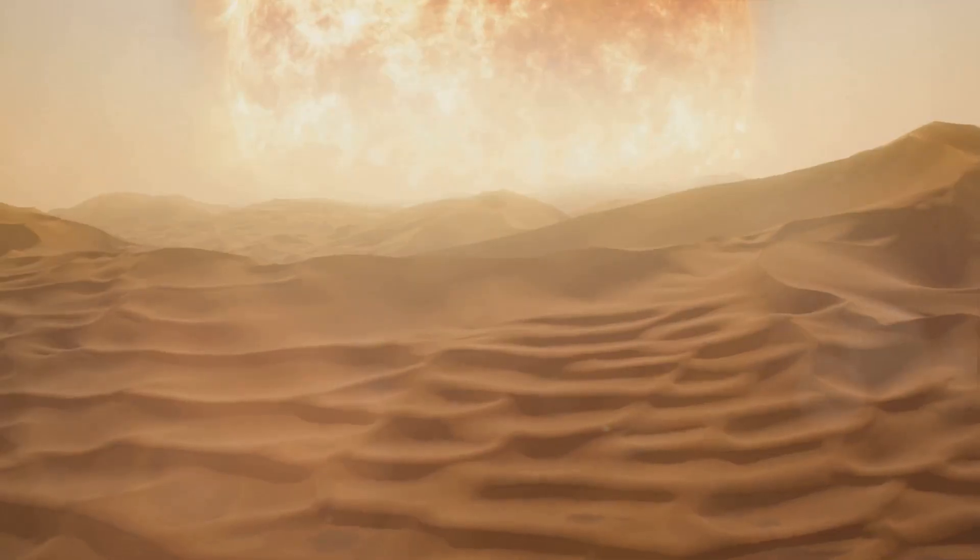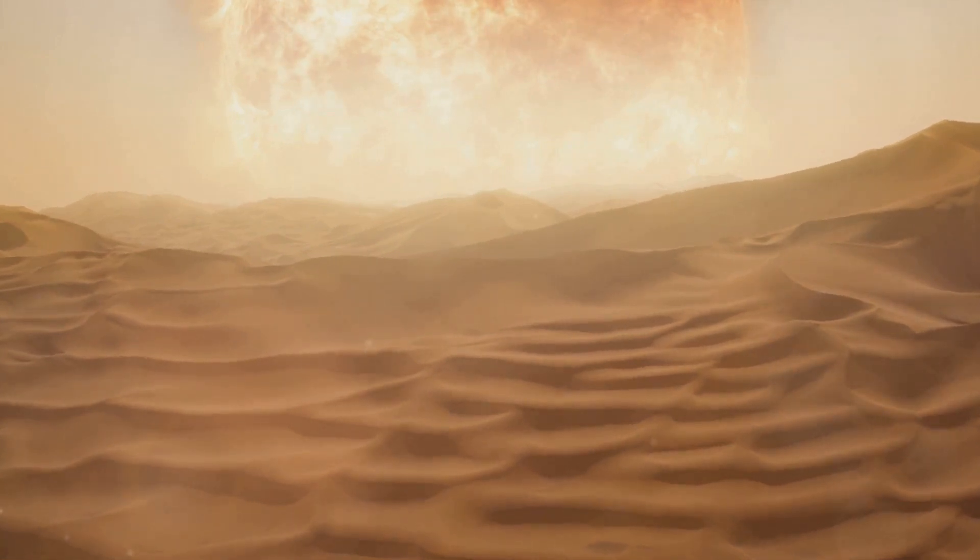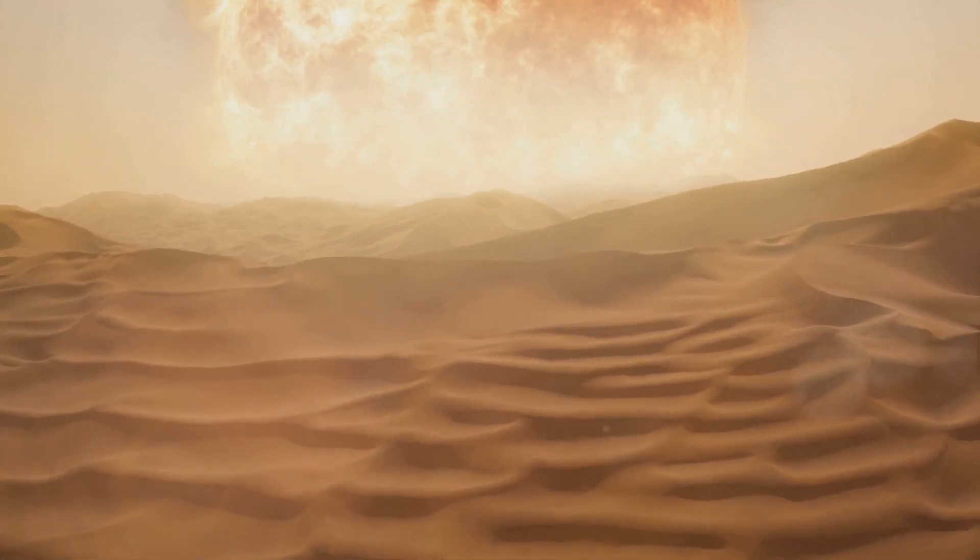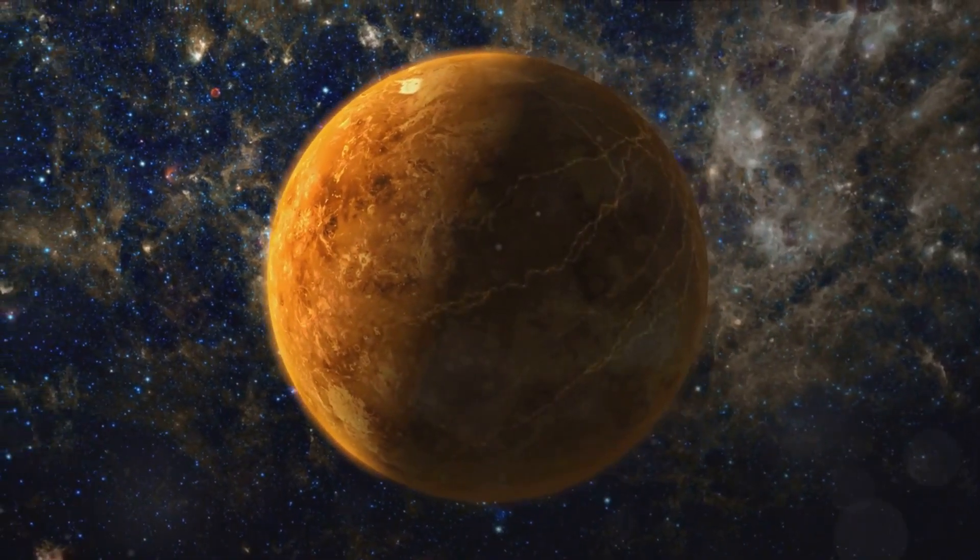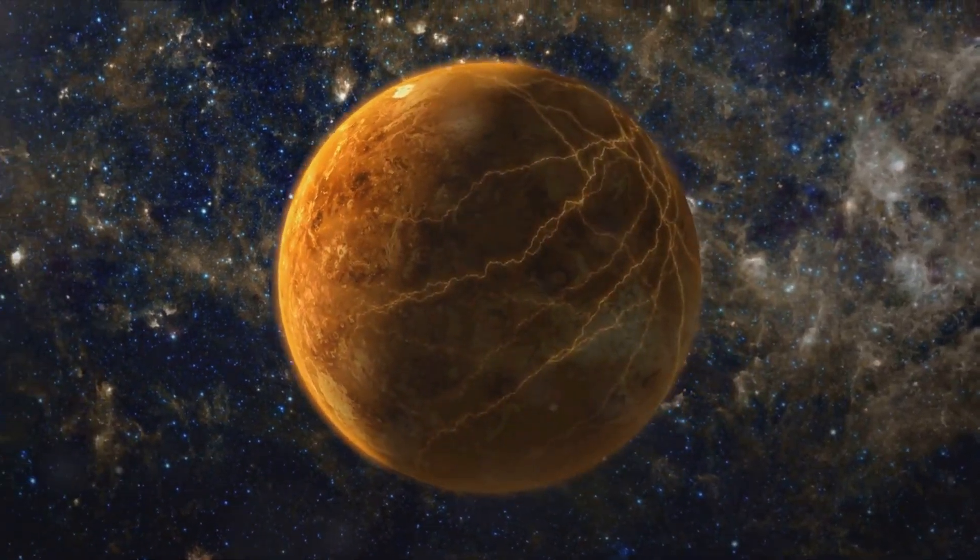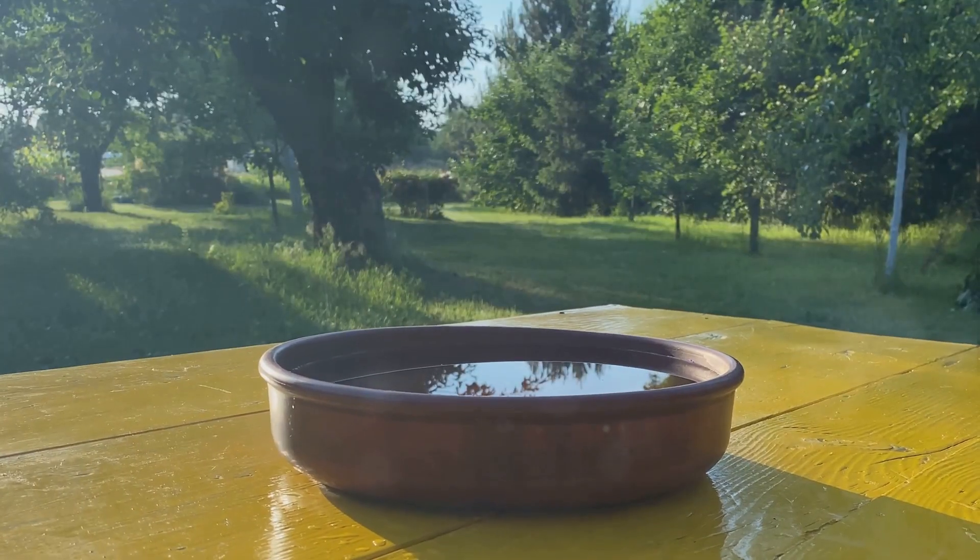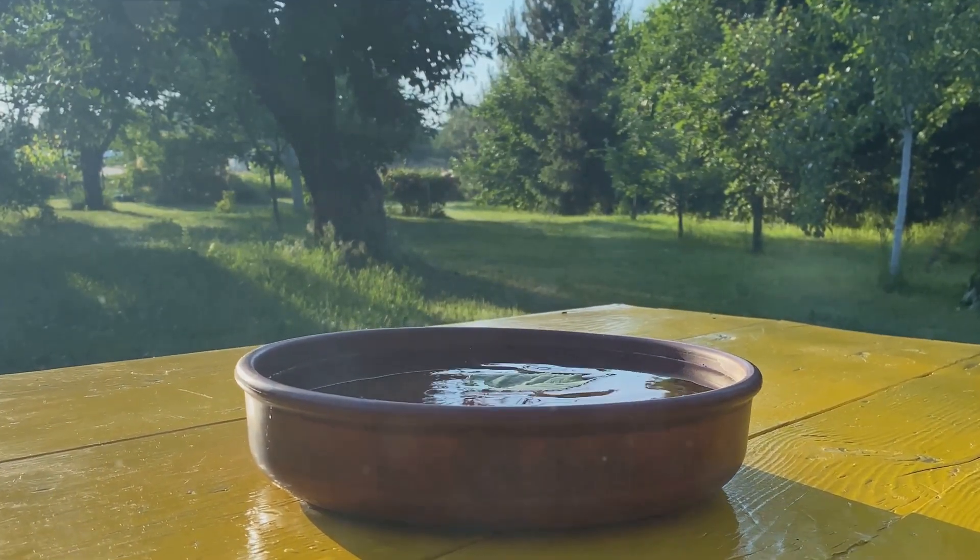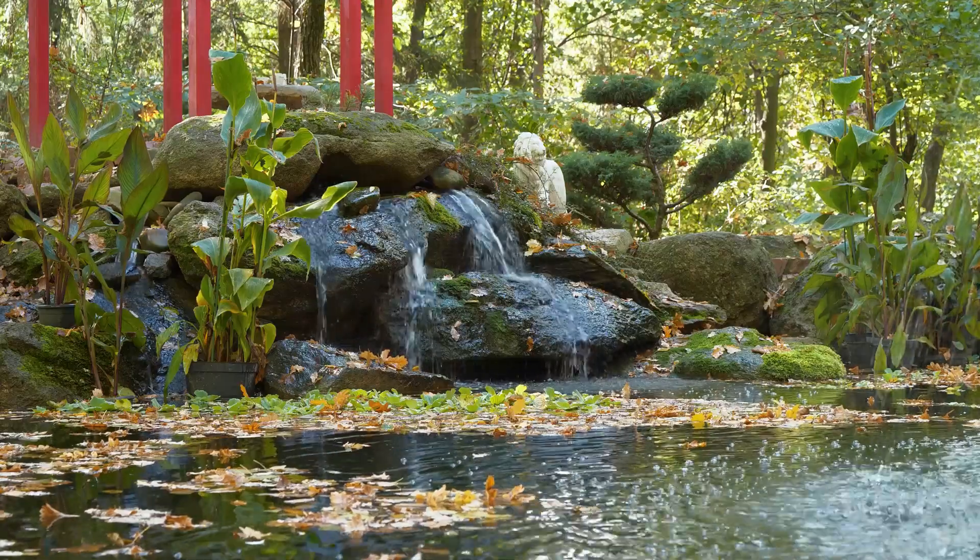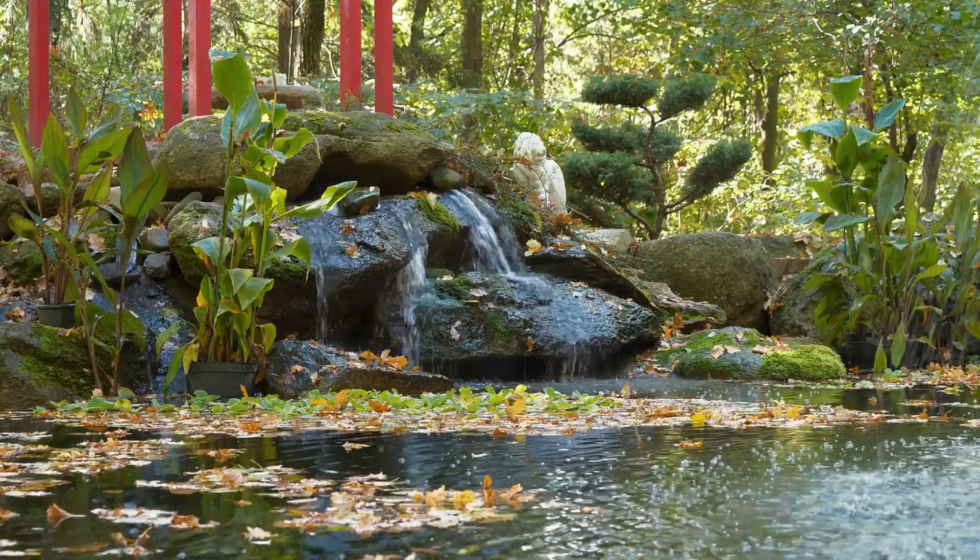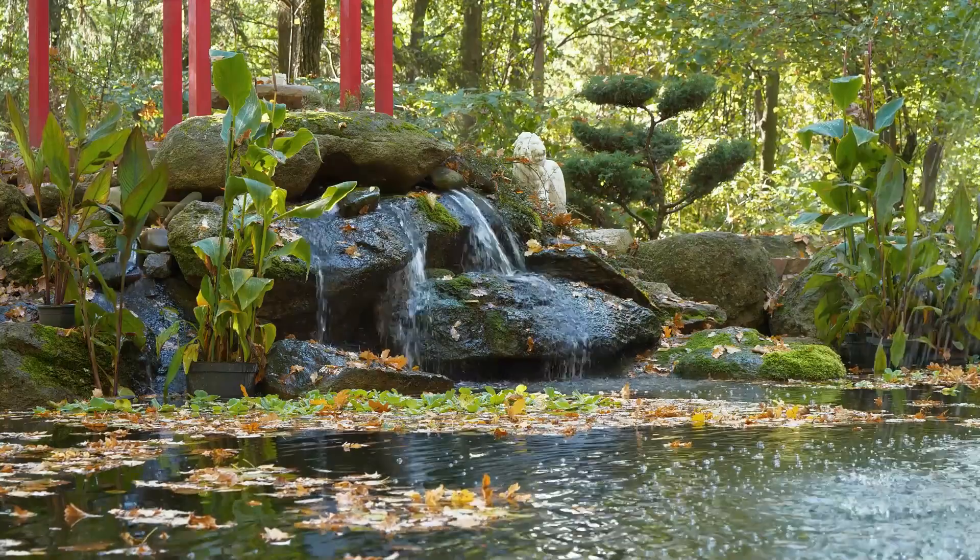Now, let's fast forward to the far, far future. The universe, as we know it, will change dramatically. Stars will burn out, galaxies will drift apart, and black holes will evaporate. This stage in the universe's life is often referred to as the heat death. But don't be fooled by its ominous name. It's not a fiery end, but rather a state of maximum entropy. In this scenario, energy is spread out so evenly that no more work can be done. There's no room for the formation of new stars or the birth of new galaxies. The universe, in essence, reaches a state of equilibrium where nothing happens. It's like a cosmic siesta that goes on forever.